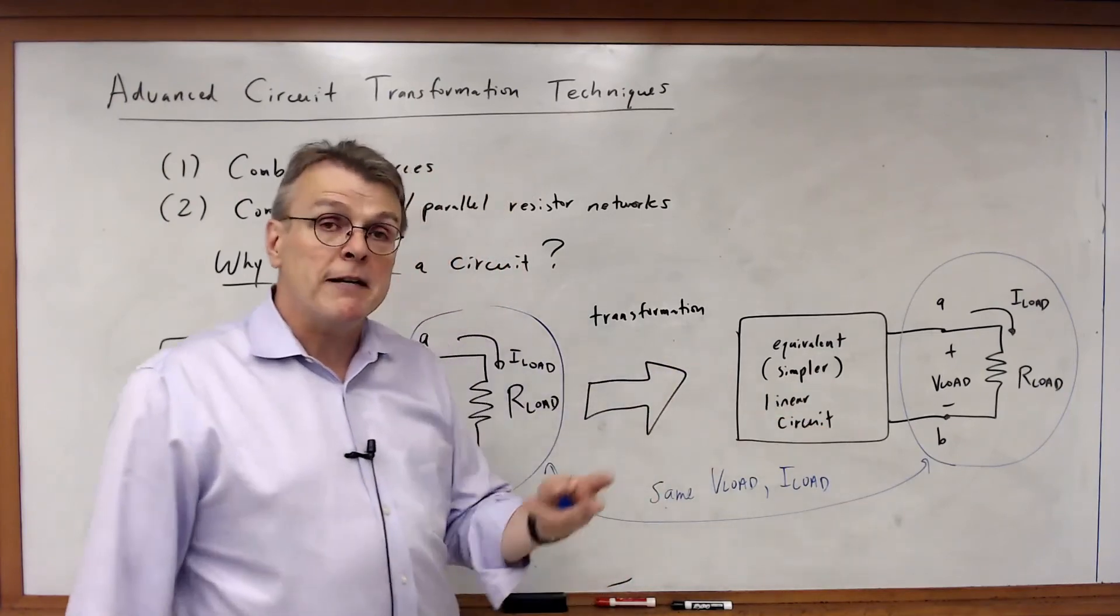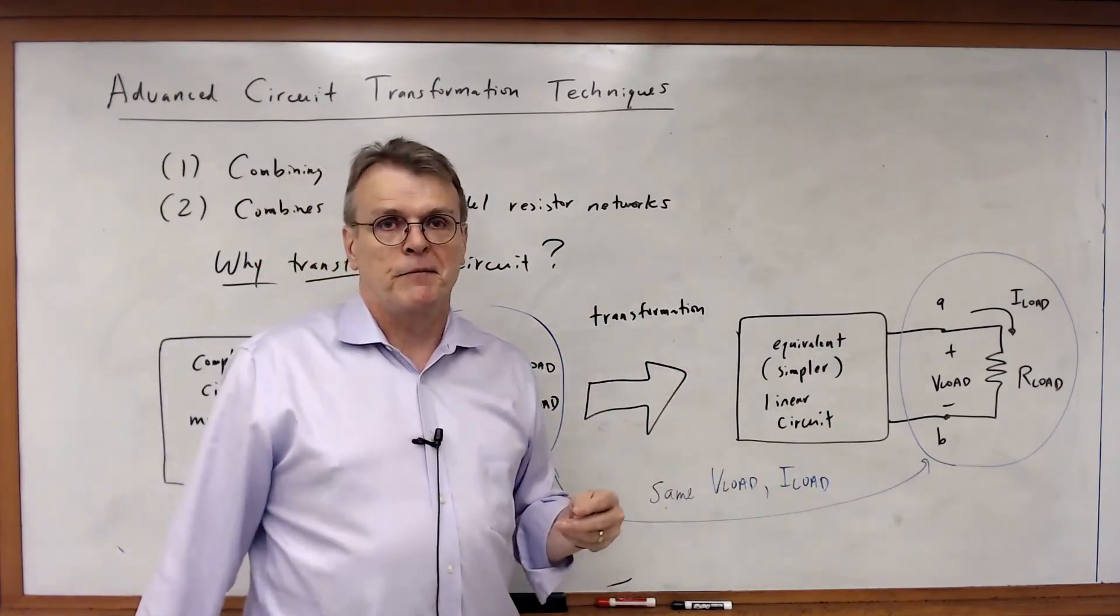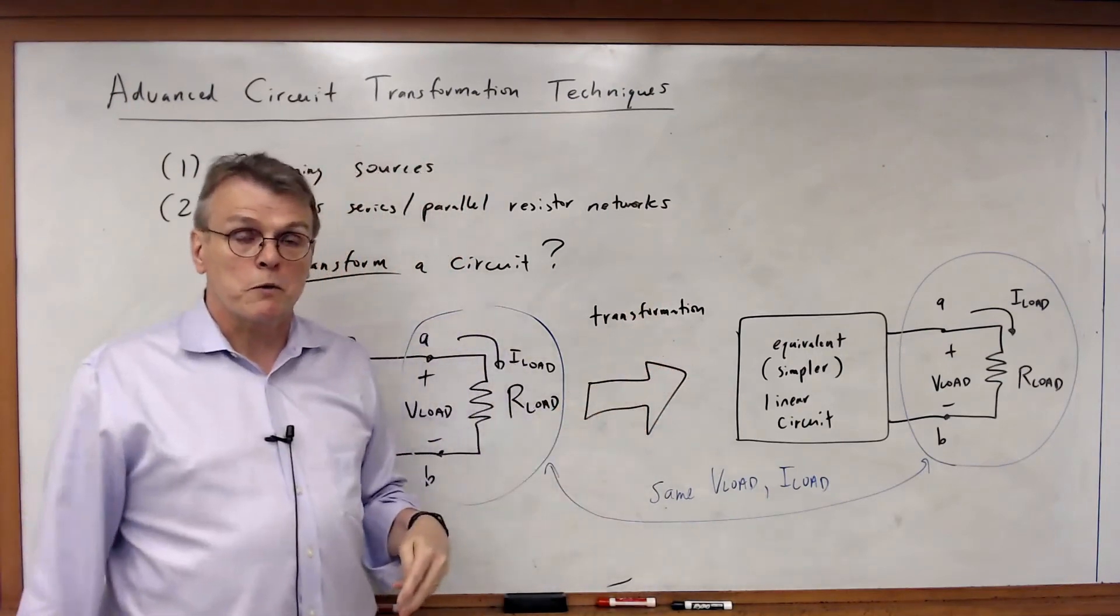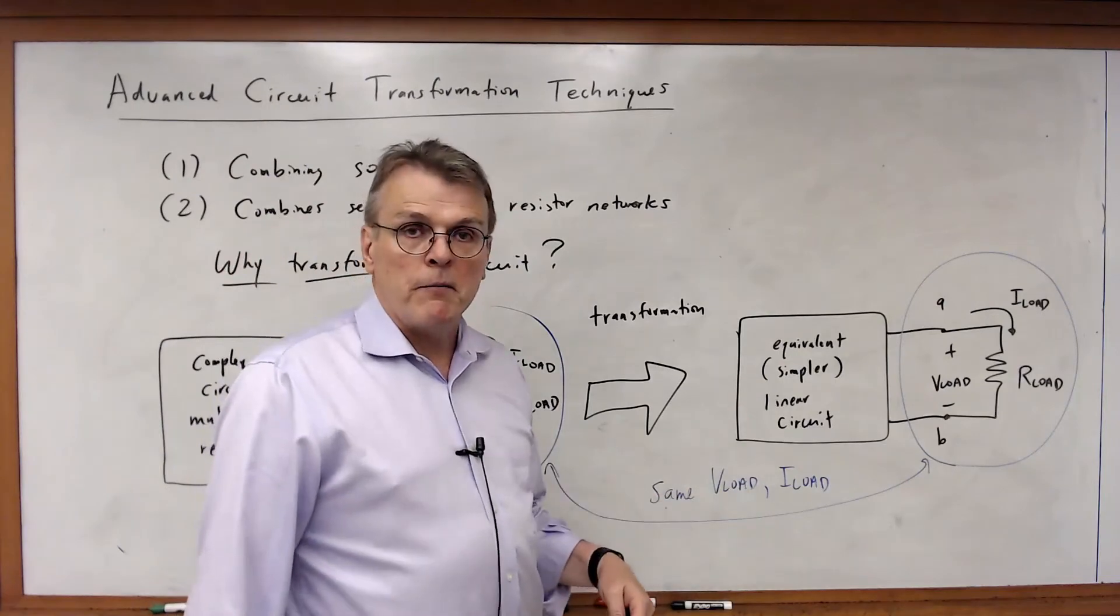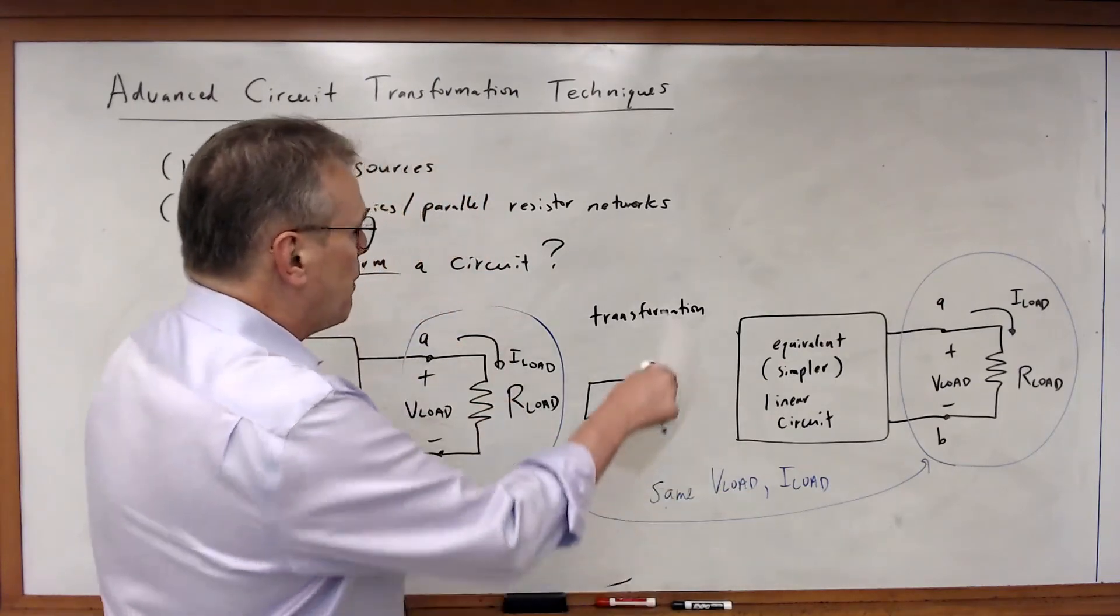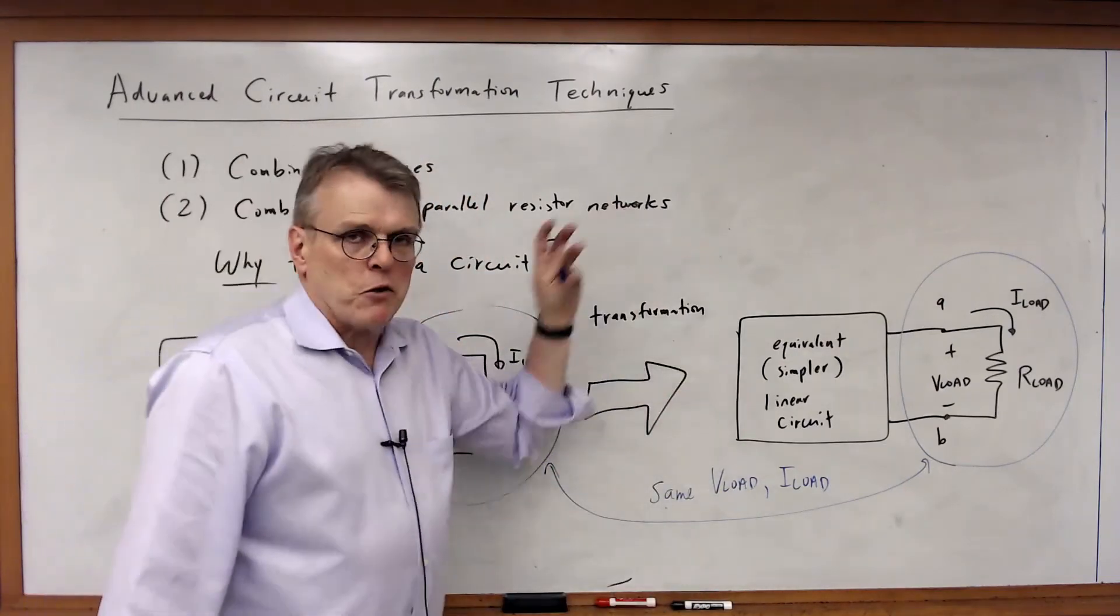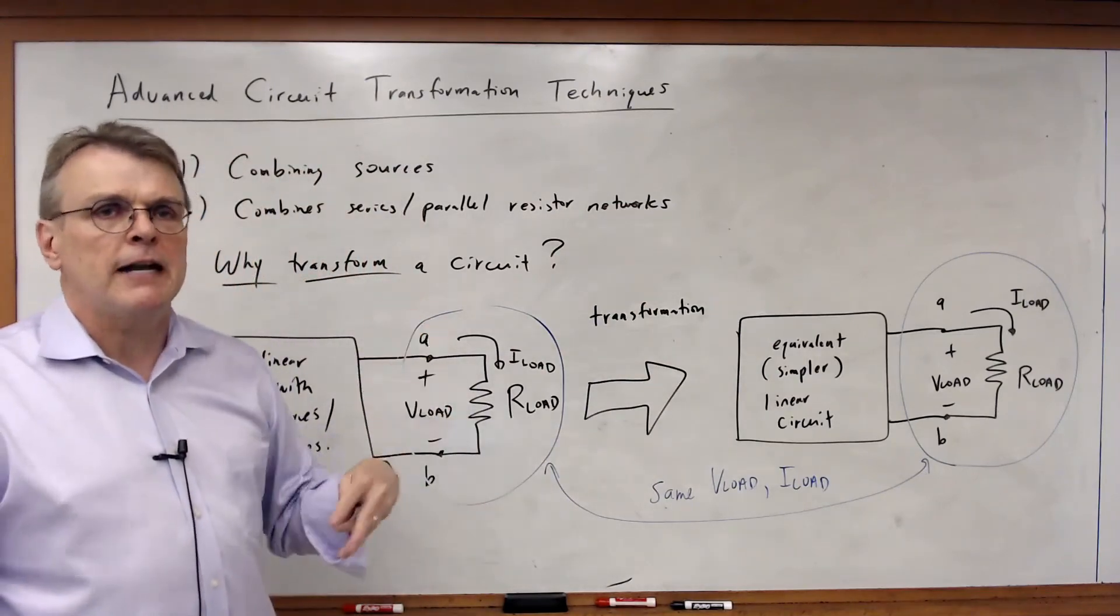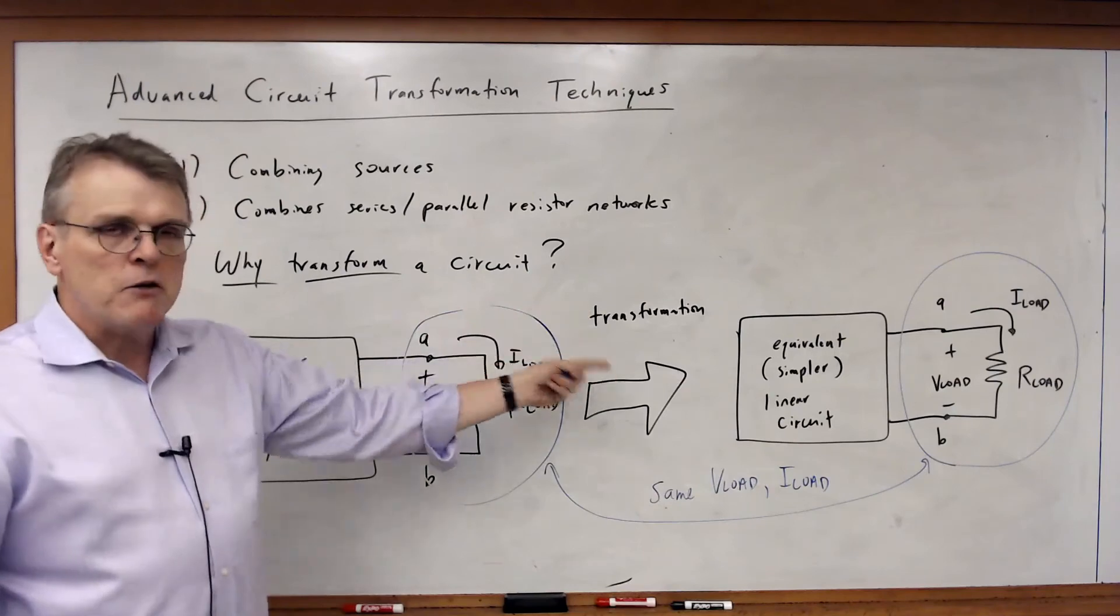In fact, as you remember, we did that with the defibrillator example. We showed how a defibrillator could be modeled just as a voltage source in series of the resistor. Same thing with a battery. Well, we're going to take that same idea and we're going to apply it to any circuits we want. So any type of circuit with any sources in it, any elements in it, we can go and we can do a transformation.